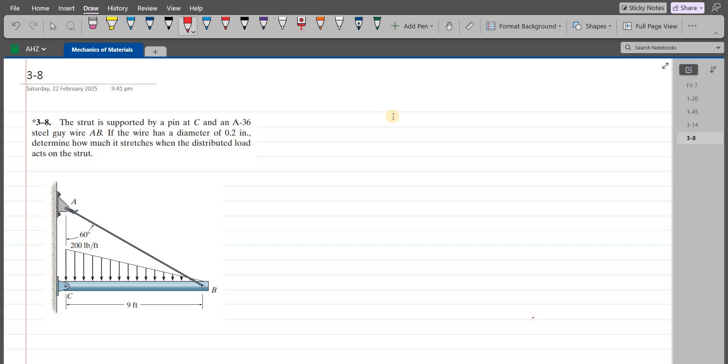Welcome back to the solutions. In this video, we will solve problem 3-8 from R.C. Hibbeler Mechanics of Materials, 8th edition. According to this problem, the strut is supported by a pin at C and an A36 steel guy wire AB. If the wire has a diameter of 0.2 inch, we have to determine how much it stretches when the distributed load acts on the strut.